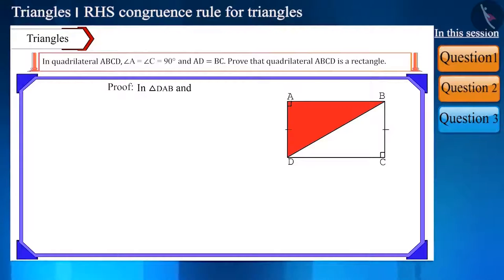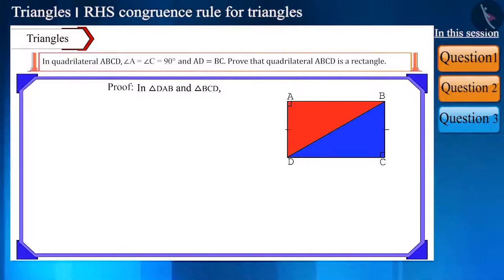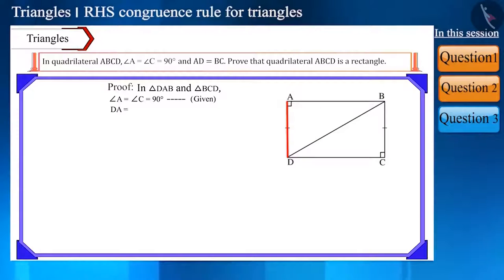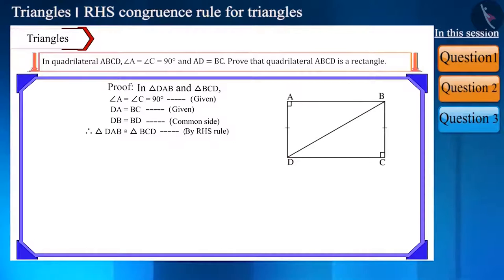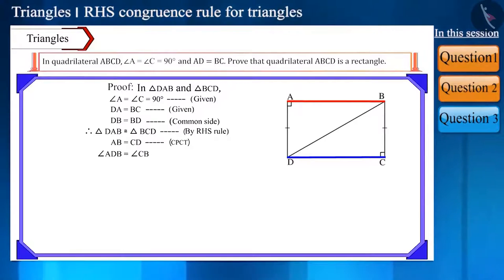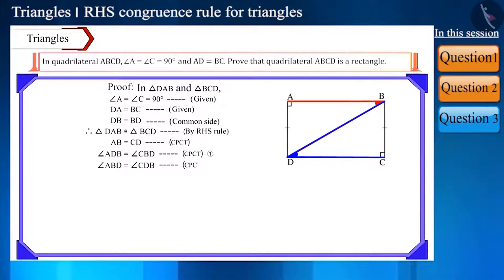In triangle DAB and triangle BCD, angle A is equal to angle C, side AD is equal to side BC, and side DB is the common side. Therefore, by the RHS congruence rule, these two triangles will be congruent and their corresponding parts and corresponding angles will also be equal. This means side AB will be equal to side CD, angle ADB is equal to angle CBD, and angle ABD is equal to angle CDB.